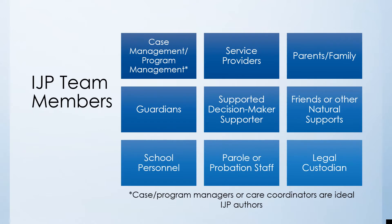An effective IJP team will include members that provide a wraparound support model for a person with a disability. Team members could include case management or program management, service providers, staff, parents, family members and other natural supports, a guardian if one exists, a supported decision-maker, school personnel, parole and probation staff, and if necessary for a youth, a legal custodian.